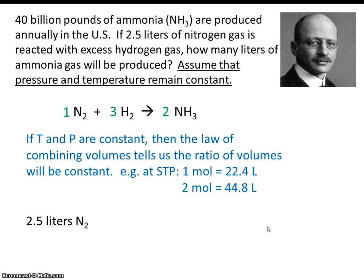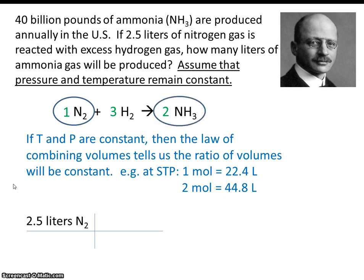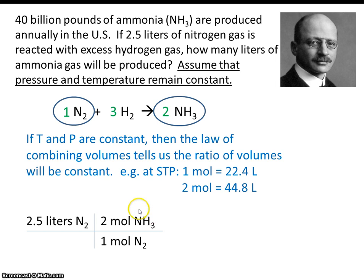So start by writing your given, like you would in any stoichiometry problem: 2.5 liters of nitrogen gas. Now we want to determine the relationship between the given and the goal. In this case, our given is nitrogen and our goal is ammonia, so the relationship is 2 to 1. We have nitrogen in the numerator, so here we need 1 mole of nitrogen in the denominator. And 1 mole of nitrogen gas will react to make 2 moles of ammonia — that's what these coefficients mean. And because the temperatures and pressures stay the same, this is all there is to this calculation. So our answer is simply 5 liters of ammonia.